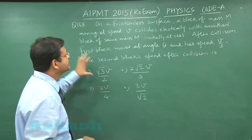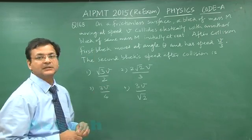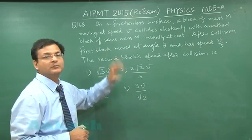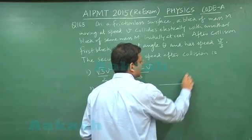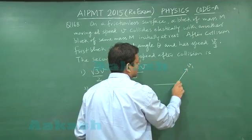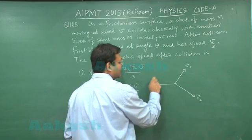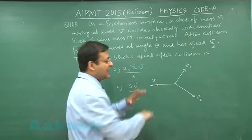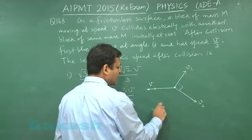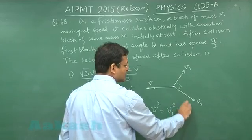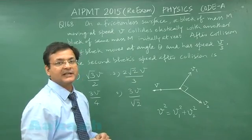Question 168 is based on two-dimensional elastic collision. Remember this is a very standard variety of question in which the two masses are identical. In this situation, the final velocities will always be perpendicular. One block with initial velocity collides with another identical body at rest, and since energy is conserved, you can always use the equation V² = V₁² + V₂².